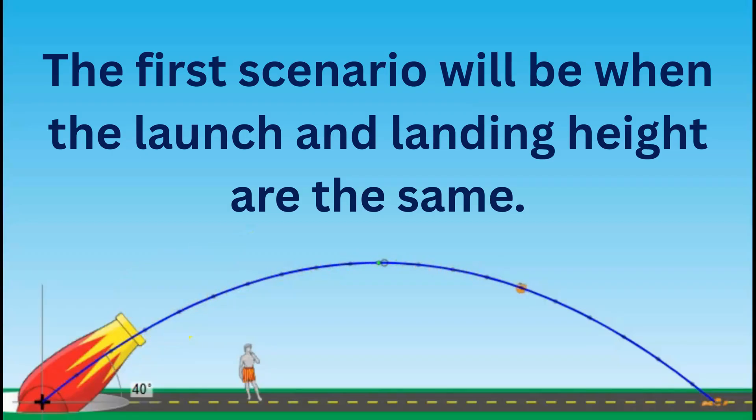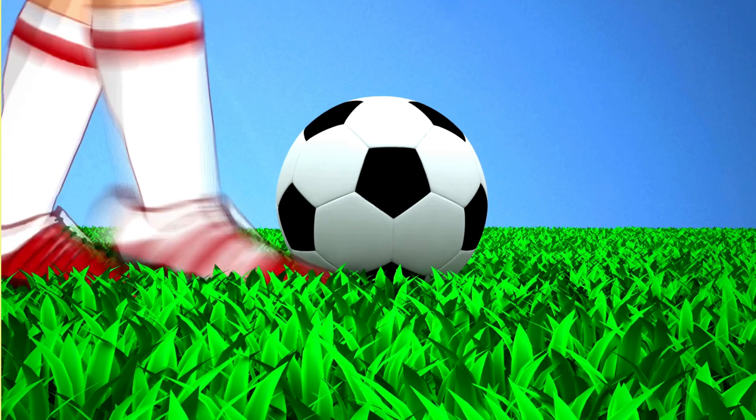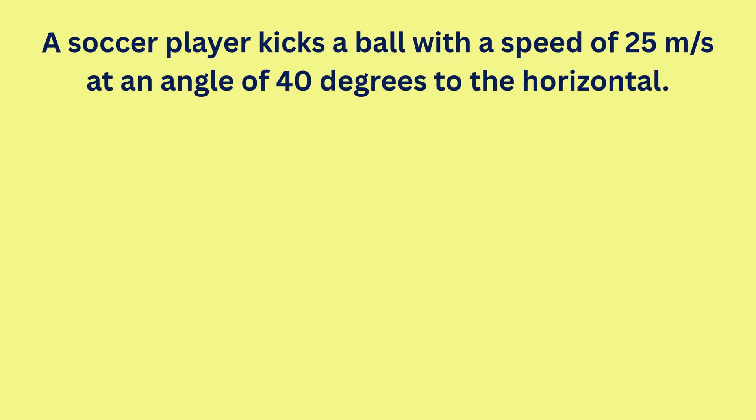The first involves a projectile that is launched and lands at the same ground level. A soccer player kicks a ball with a speed of 25 meters per second at an angle of 40 degrees to the horizontal.